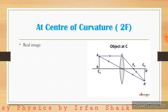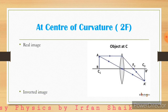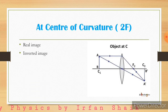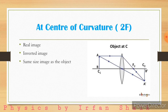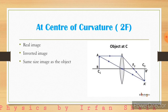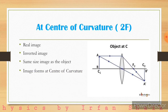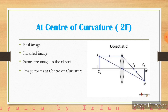It is a real image, and also an inverted image — A'B' is inverted, below the principal axis. The image is the same size as the object. This is the only case where we get the image the same size as the object, and the image forms at the center of curvature.